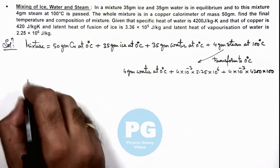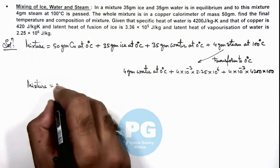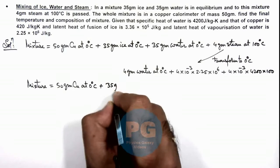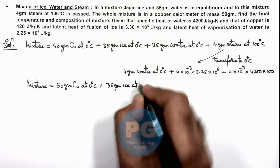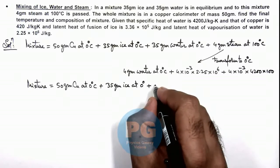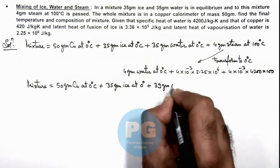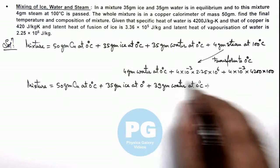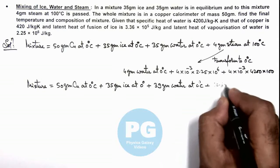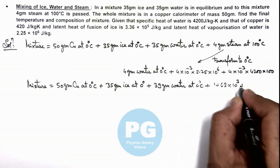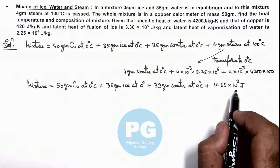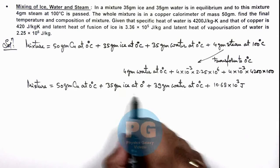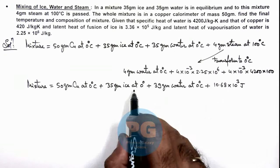So now the mixture is equal to 50 gram copper at zero degree centigrade, plus 35 gram ice at zero degree centigrade, plus 39 gram water at zero degree centigrade, plus the total amount of heat. If we add up this total heat, it gives us 10.68 multiplied by 10 to the power 3 joules of heat. This much amount of heat, when supplied to the ice, will further melt it.